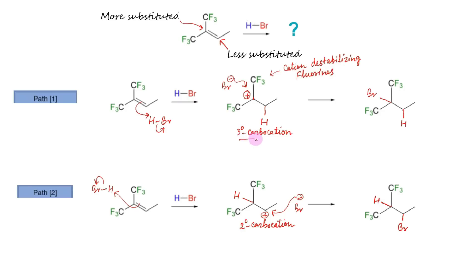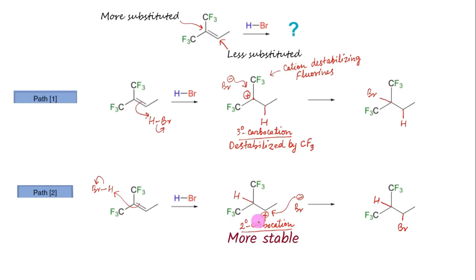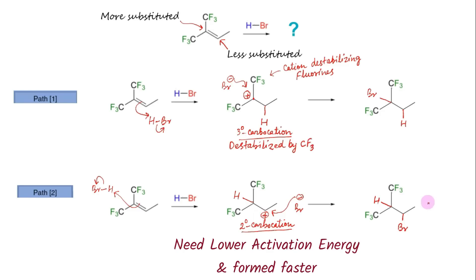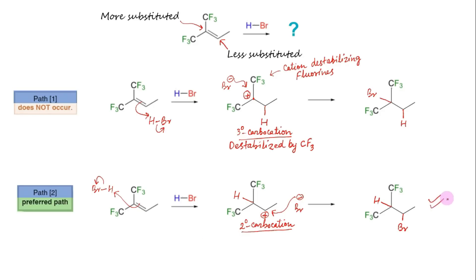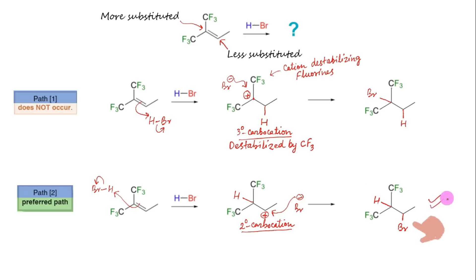In Path 2, the carbocation is secondary but the positively charged carbon is not directly attached to CF3 destabilizing groups. Thus, Path 1 goes via a tertiary carbocation that is destabilized by CF3, whereas Path 2 goes via a secondary carbocation that is not destabilized by CF3. In this particular case, the secondary carbocation is more stable than the tertiary carbocation, meaning it needs lower activation energy and is formed faster. Therefore, the reaction prefers to go via Path 2 to form the product with hydrogen on the more substituted carbon and bromine on the less substituted carbon — contrary to the product obtained with propene.